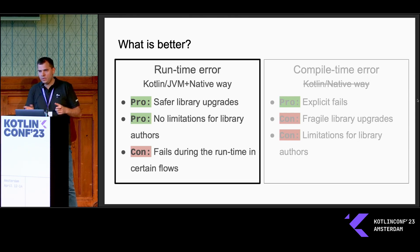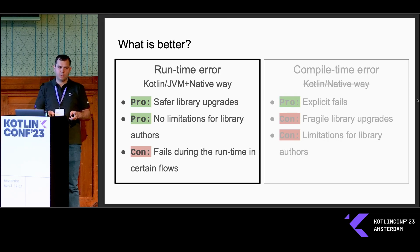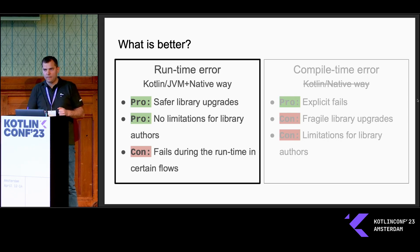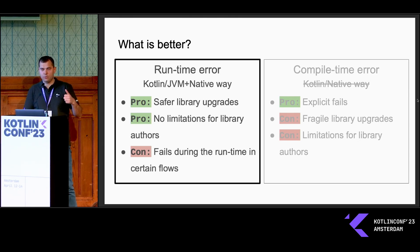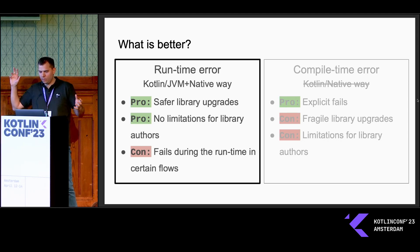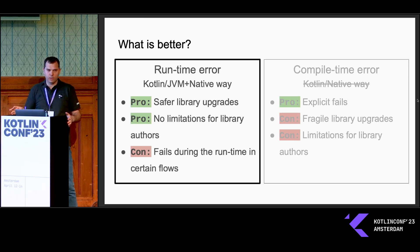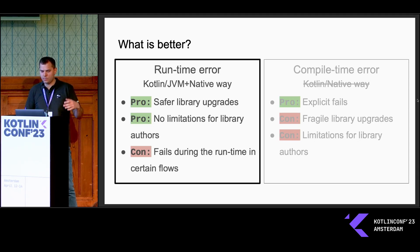This approach has two major advantages. First, it makes library upgrades in your projects safer — you don't risk crashing your build when you upgrade a library to a minor version. Second, it gives freedom to library authors, because they can do whatever they want in the experimental parts of their libraries.